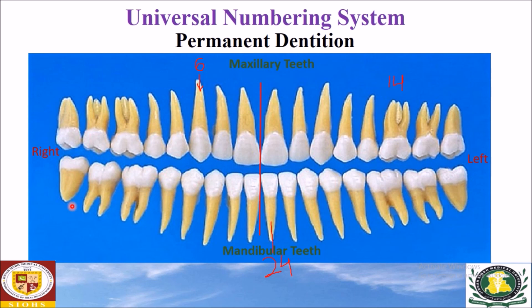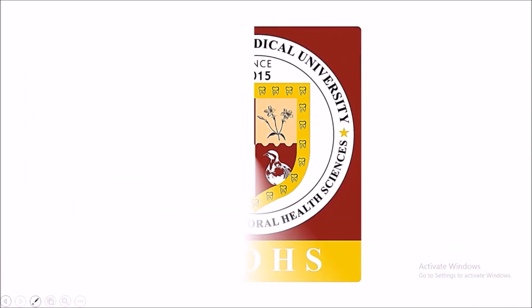It is very important that whether you are using FDI, Palmer, or the universal notation system, you must have a good understanding of individual tooth morphology, because sometimes you have to number teeth in cases of mixed dentition, retained teeth, or congenitally missing teeth. Thank you very much.